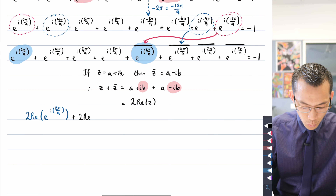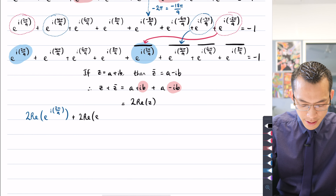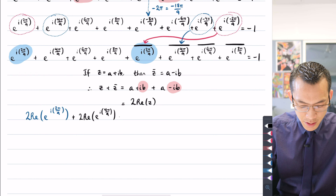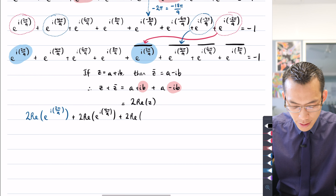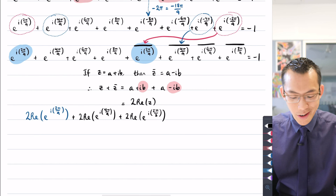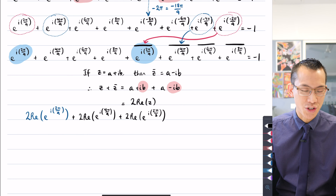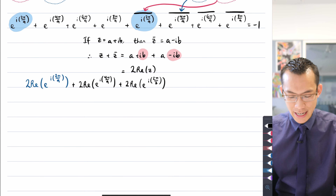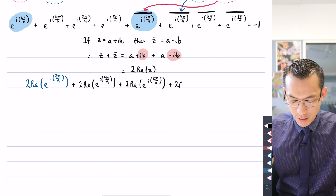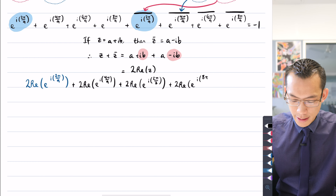So this is 2 times the real component of e to the i 4π on 9, leave that the same. The next one I can simplify: this is the real part of e to the i 2π on 3, because I know what the real part of e to the i 2π on 3 is — it's cosine of 2π on 3. And I've got 2 times the real component of this last term, 8π on 9. That's all equal to negative 1.